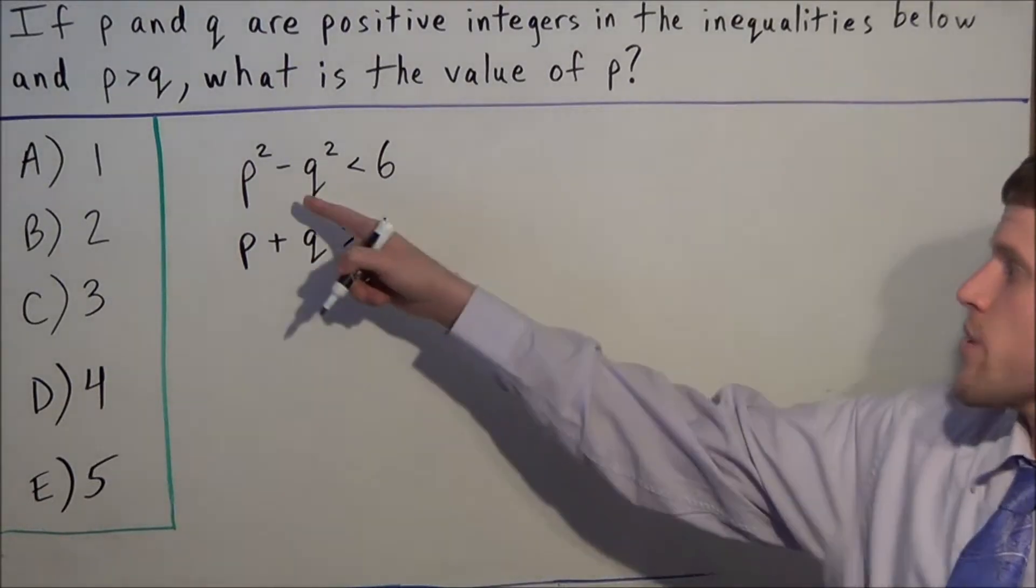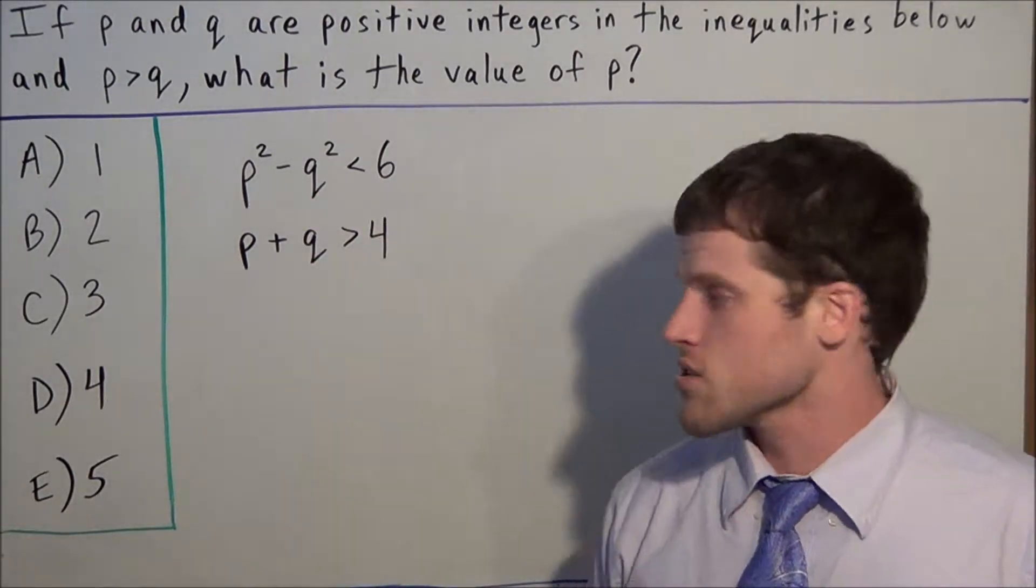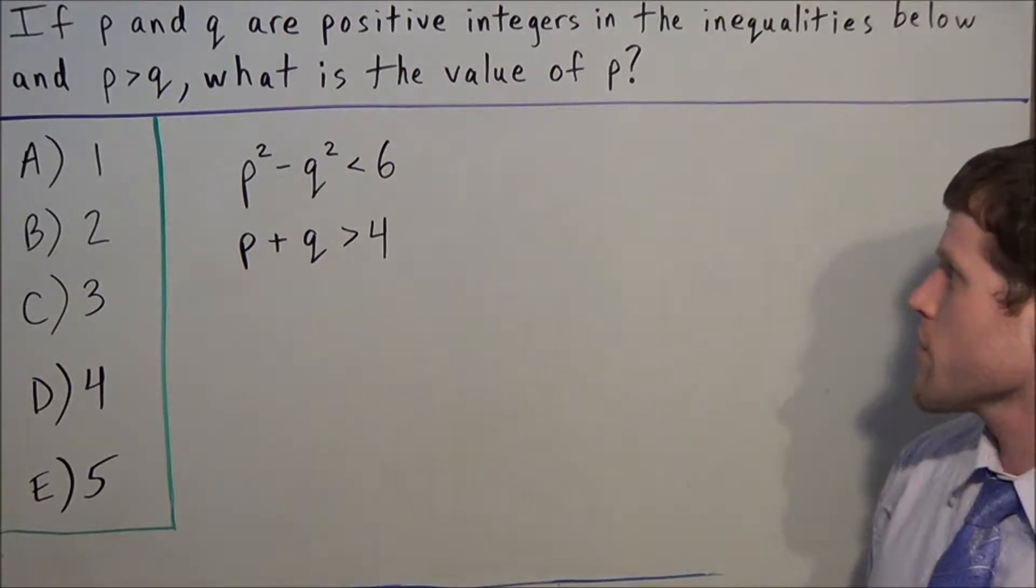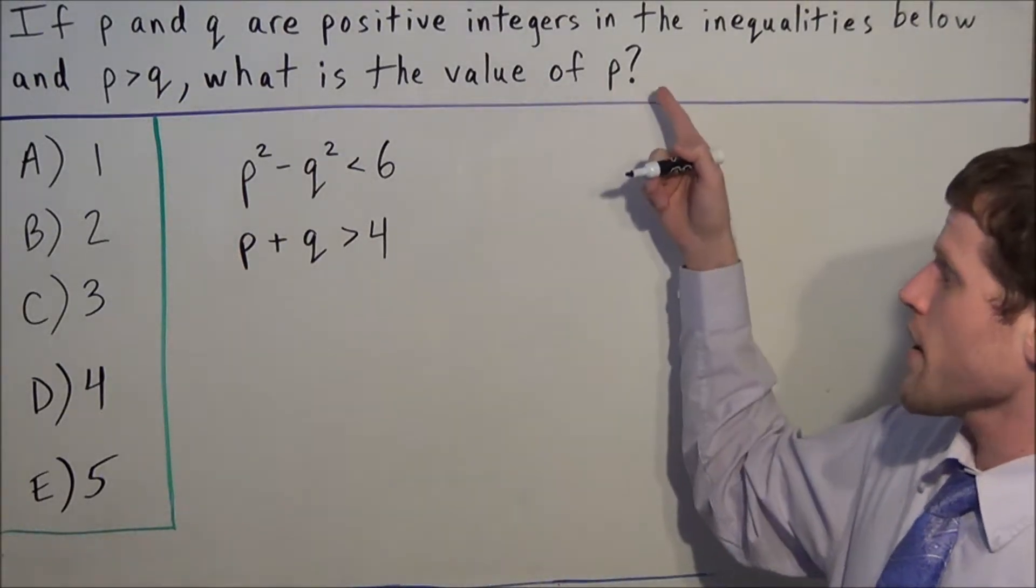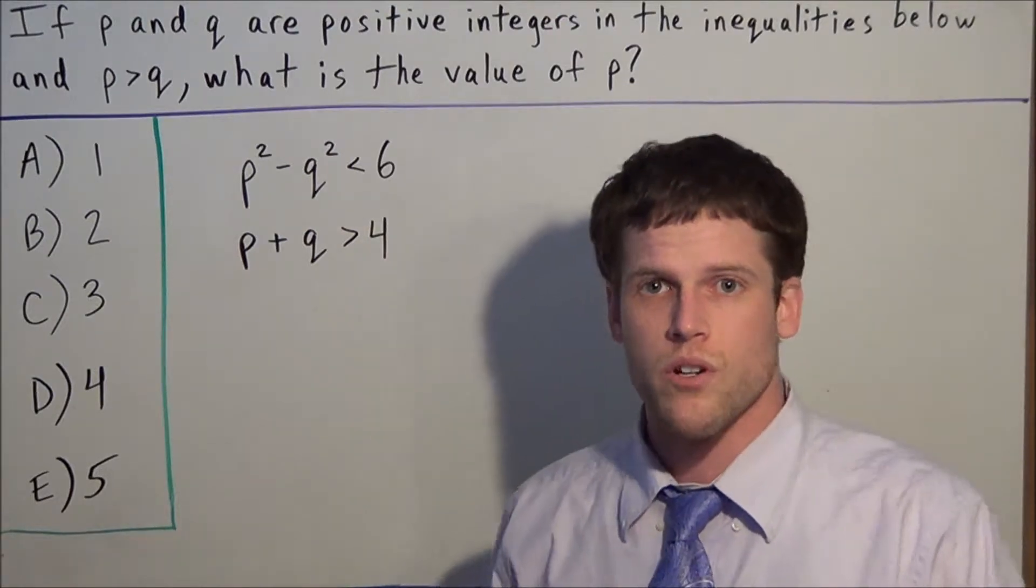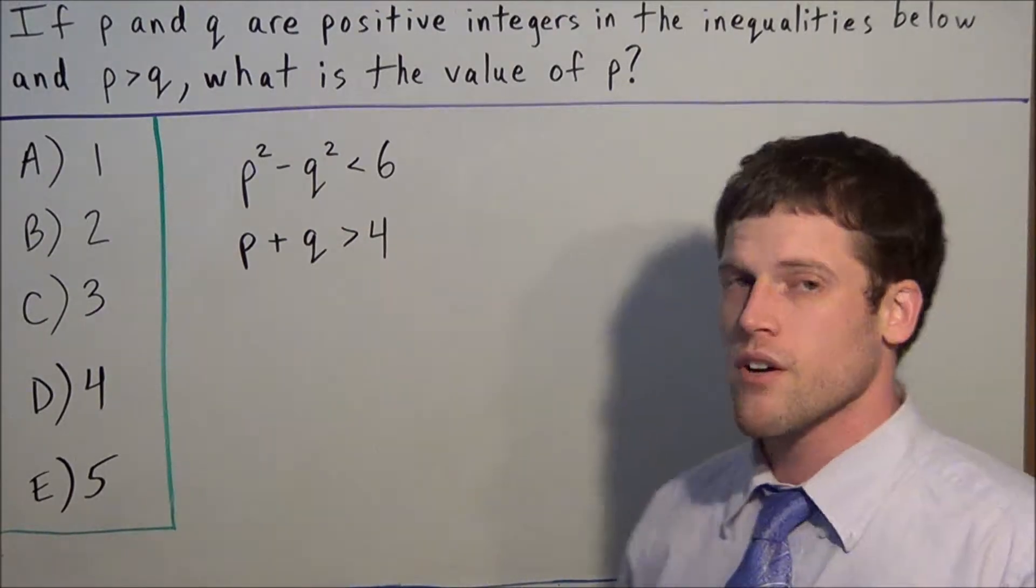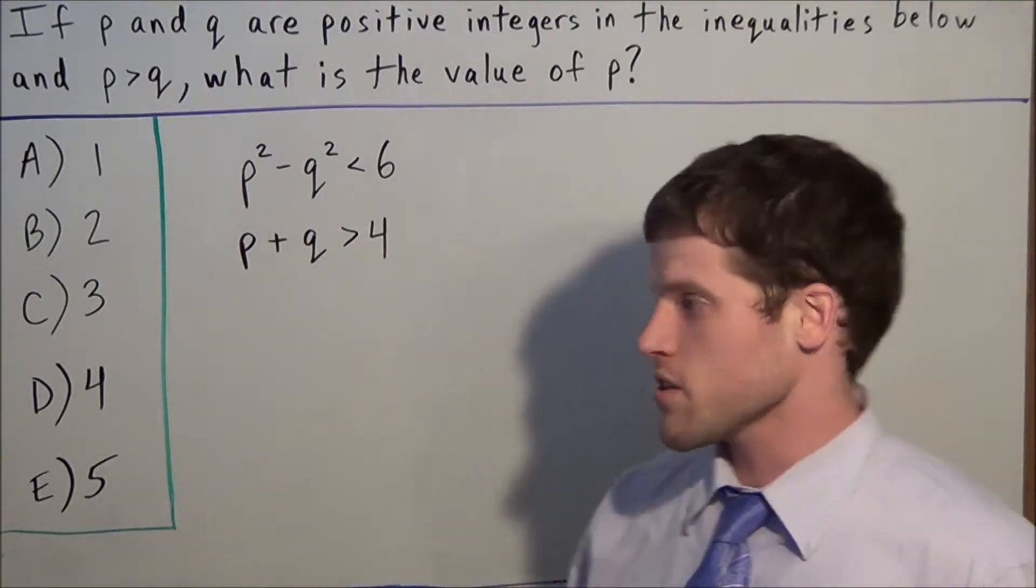When we look at this problem, we have p² - q² < 6 and p + q > 4. Since we're trying to find the value of p, it's tempting to just plug in answers. But I promise you're going to run into some difficulty if you try that.